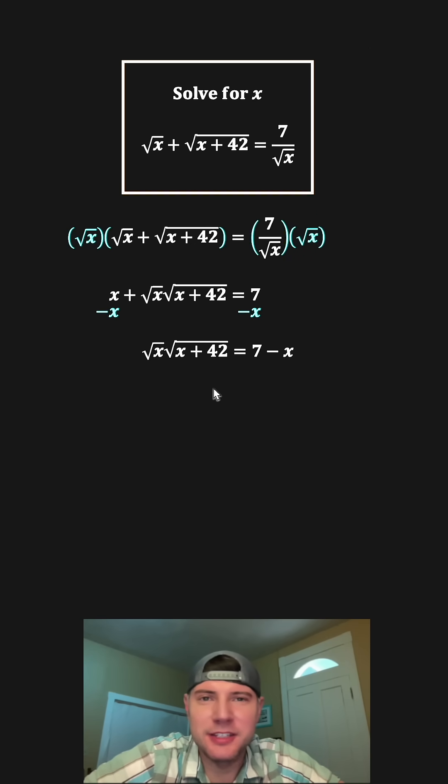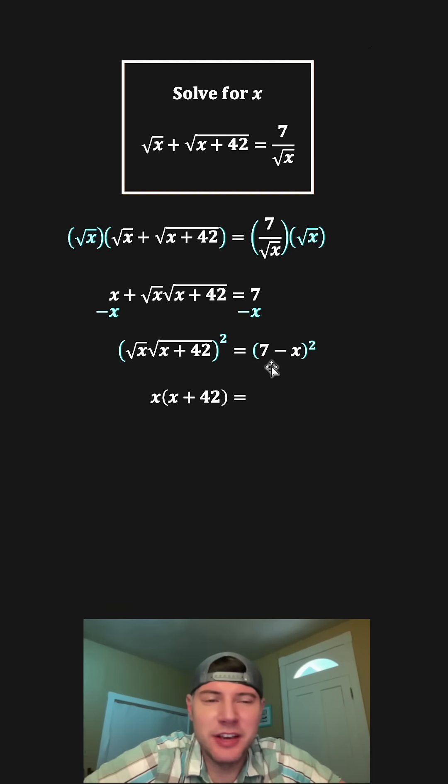And now that these roots are alone on this side, we can get rid of them by squaring both sides. On the left-hand side, both of these square roots and the square will cancel each other out, leaving us with x times the quantity x plus 42. And on the right-hand side, to do 7 minus x squared, there's a couple different ways you can handle this.